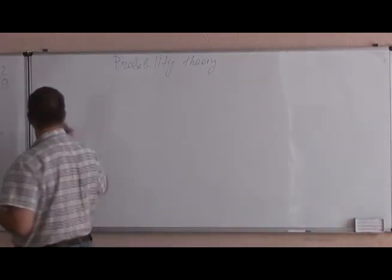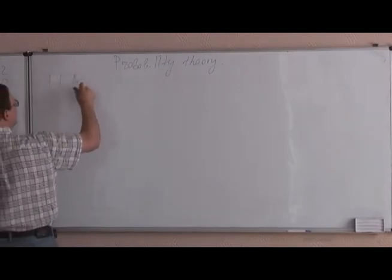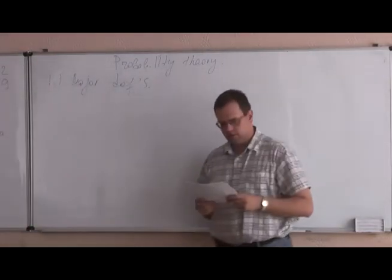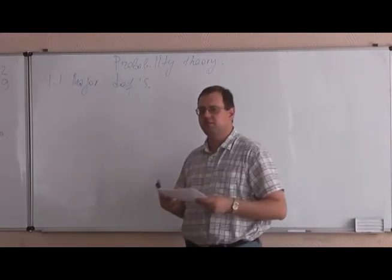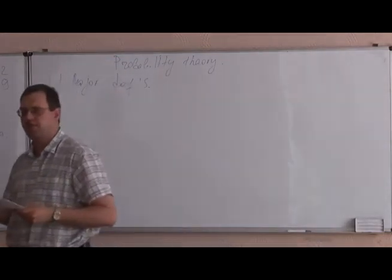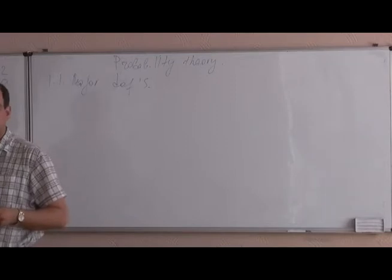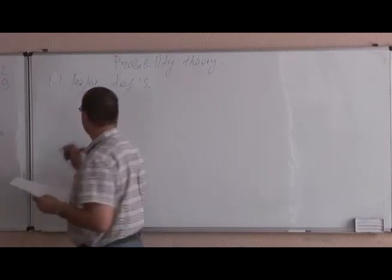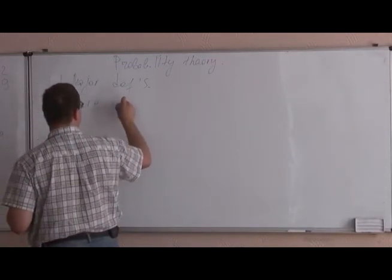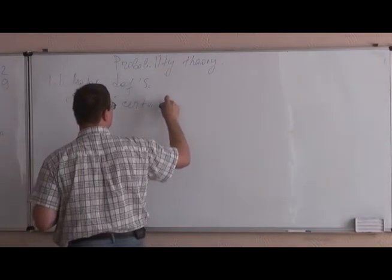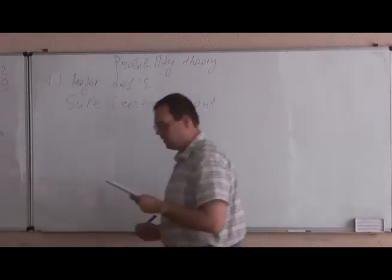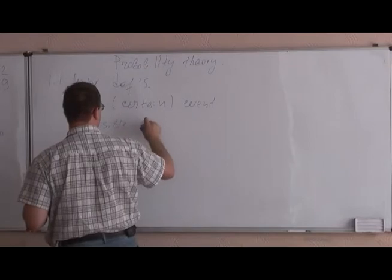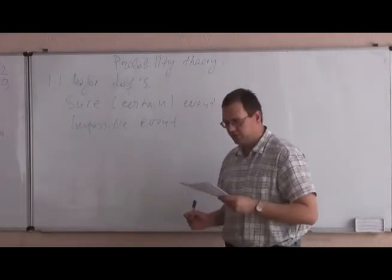Once we are talking about probability theory, we will start with major definitions. The very basic definition we are going to use in probability is the event. This is something that we cannot define — event is something happening. Events can be certain events or sure events, or an impossible event.